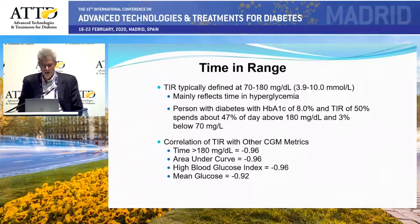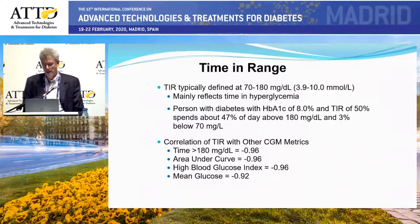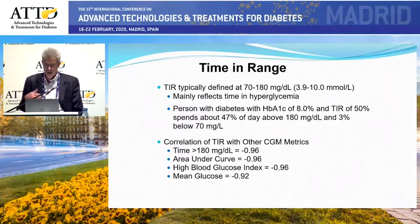Time in range is typically defined as 70 to 180 milligrams per deciliter, or 3.9 to 10 millimoles per liter. As a general rule, when we get into pregnancy and other situations, it may be different.